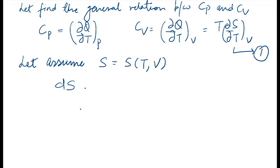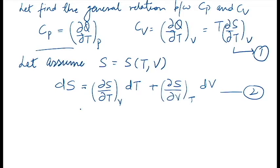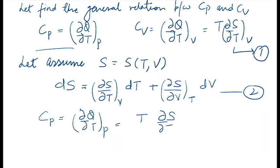We write the exact differential for entropy as: dS = (del S / del T) at constant volume times dT, plus (del S / del V) at constant T times dV. This is equation number two. Since Cp = del Q / del T at constant pressure, we can rewrite this as Cp = T times (dS/dT) at constant pressure. This is equation number three.